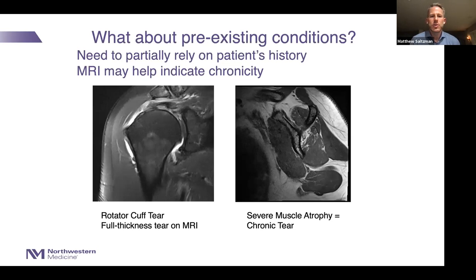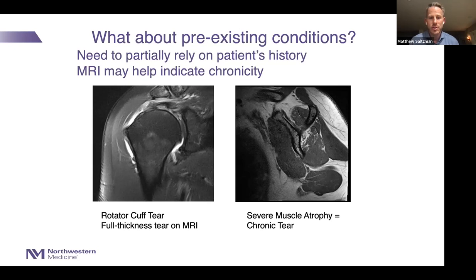What about pre-existing conditions? You rely partially on the patient's history — sometimes they'll say they had surgery 10 years ago or another work injury. But you can also use the MRI, particularly of the shoulder, to help indicate chronicity. For that same retracted rotator cuff tear, if you look at the T1 sagittal images, you can see profound grade 2 to grade 3 changes of the muscle bellies of the supraspinatus and infraspinatus. If that MRI was taken right after the injury, you know that's a chronic tear.